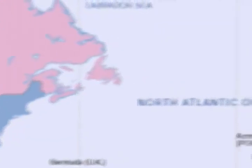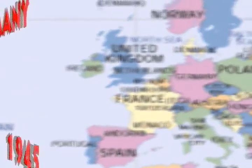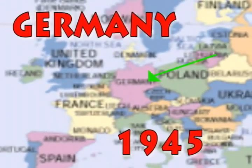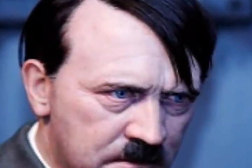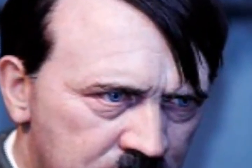First we go off across the pond to Germany. It was the year 1935. Adolf Hitler, depressed after recent defeats to the Allies, made the fateful decision to take his own life.